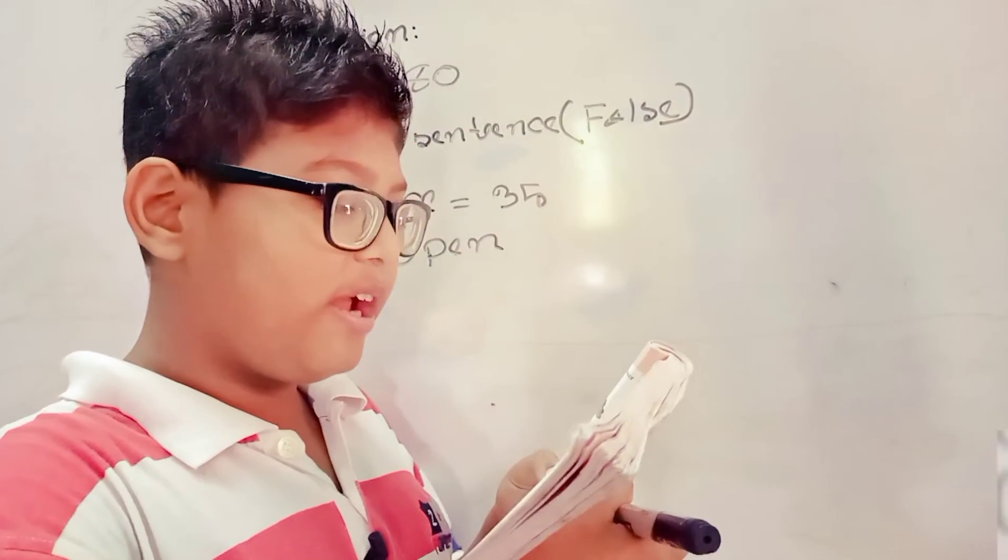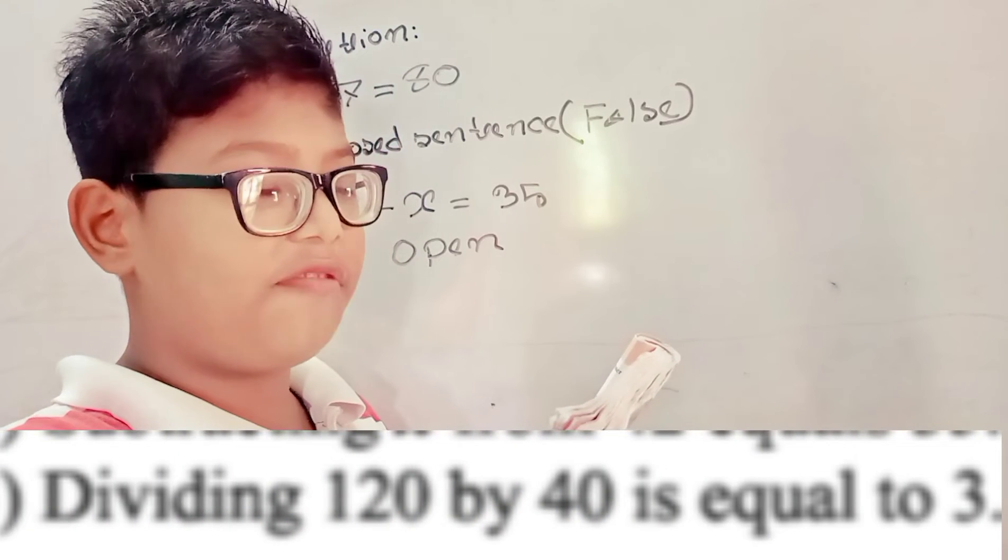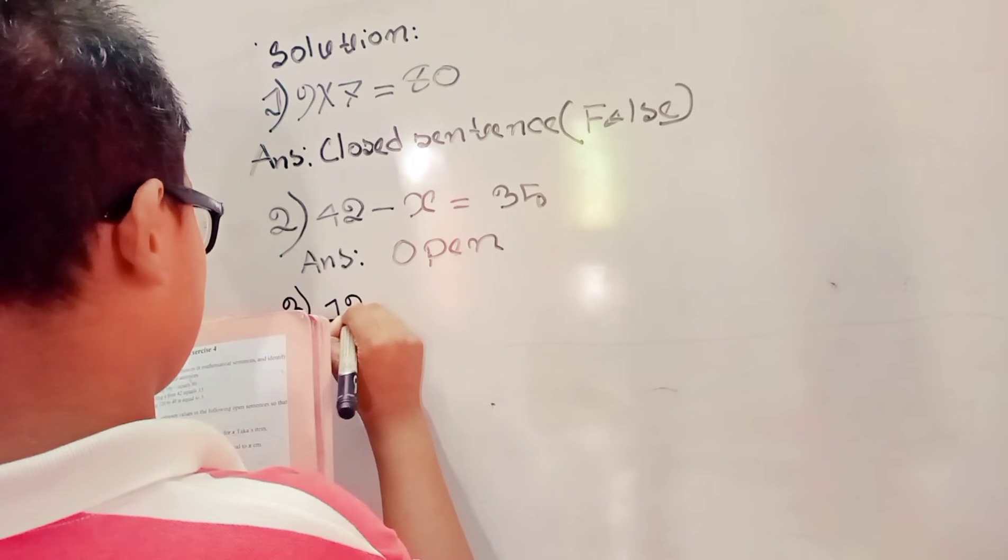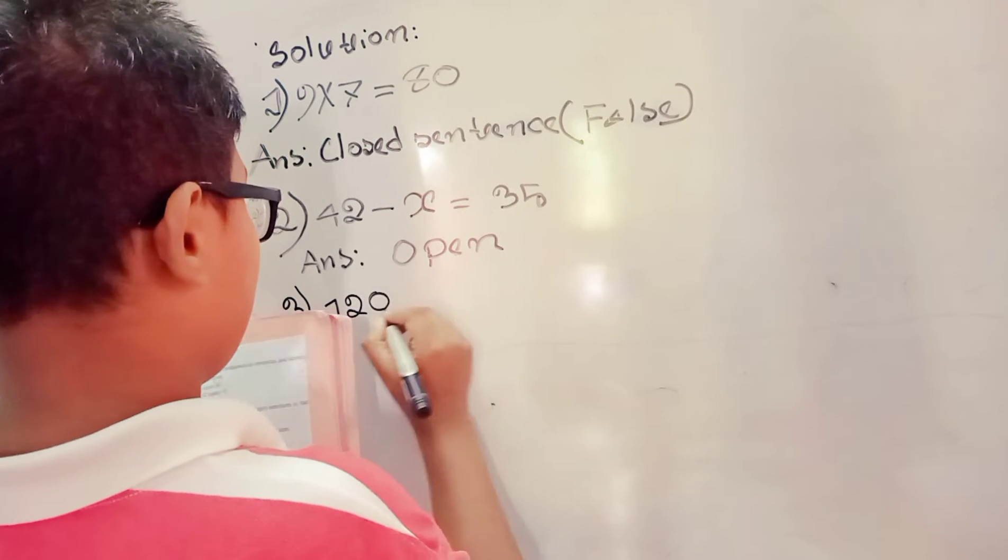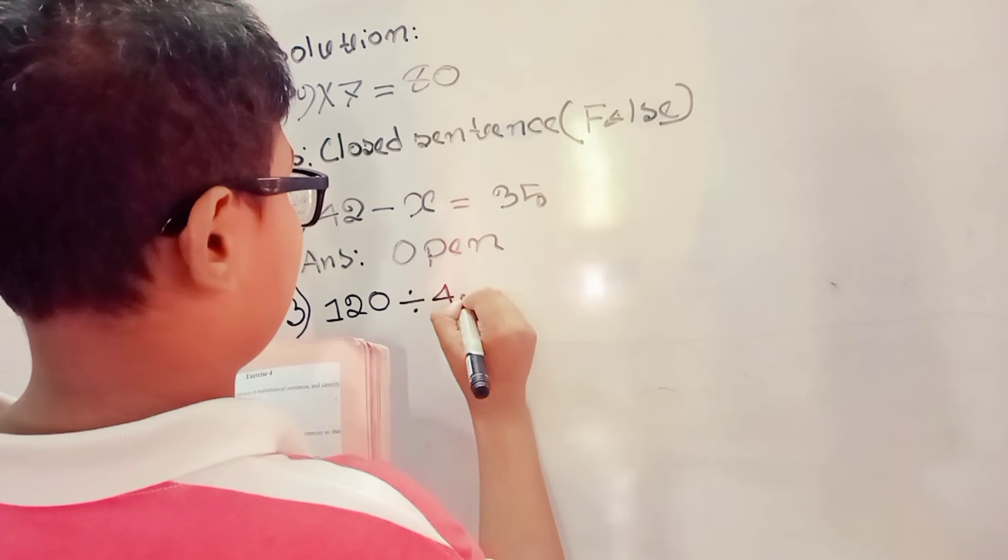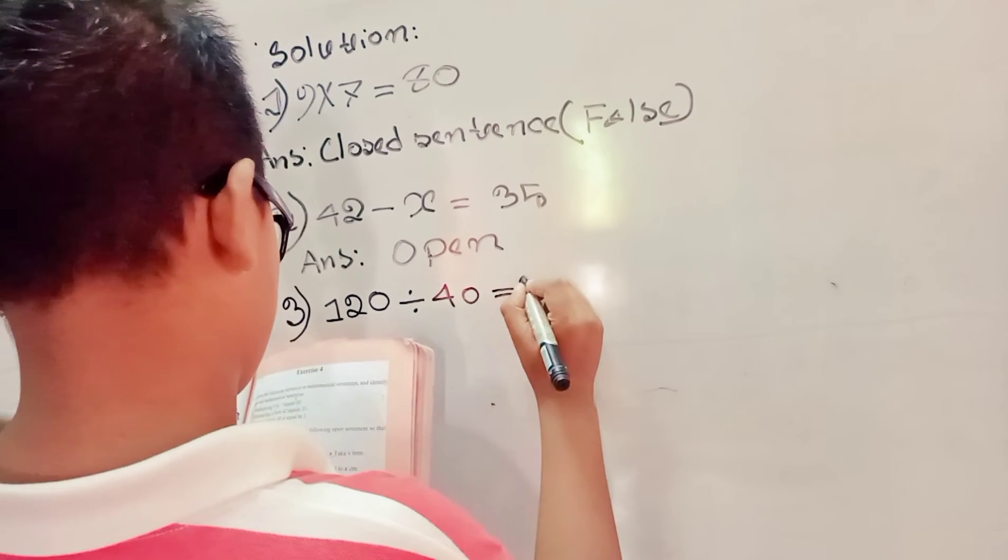Dividing 120 by 40 is equal to 3. So, we can write 120 divided by 40 equal to 3.